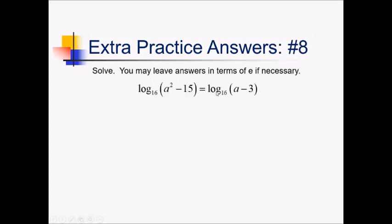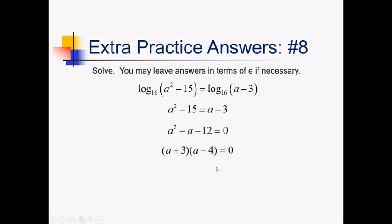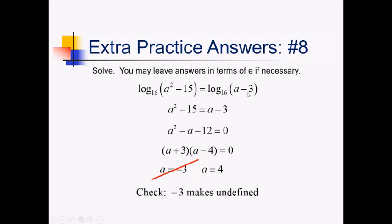On this problem, to get rid of these logs on each side, I have to raise the base 16 to both sides. I only have a single log on each side, so I can do that right away. That'll just cancel my logs, leaving me with a squared minus 15 equals a minus 3. This is a quadratic equation — I'm going to zero this thing out so I can try factoring. So I've got a squared minus a, and negative 15 plus 3 gives me negative 12, all equals zero. Things that multiply to negative 12 and add up to negative 1: positive 3 and negative 4. So from this factorization, I get a equals negative 3 and positive 4. Do those answers both work? If I plug negative 3 in, I end up getting negatives inside the log, which is no good. Since negative 3 makes the original undefined — you can't log a negative number — that's an extraneous root. Checking 4: 4 minus 3 is fine, and 4 squared minus 15 is also a positive number. So we keep 4, but negative 3 is gone.